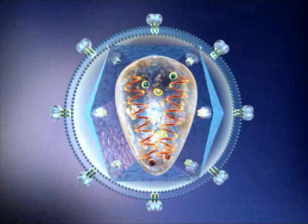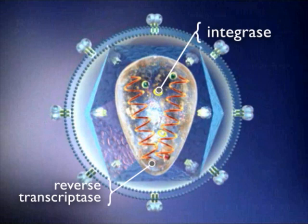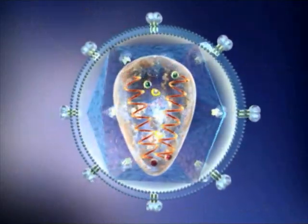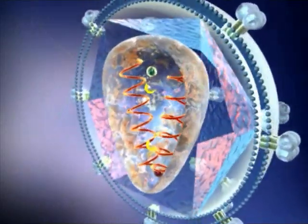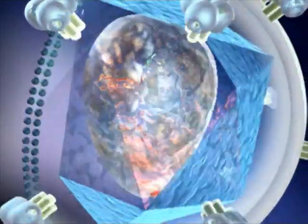These components include three enzymes called reverse transcriptase, integrase, and protease, and two strands of ribonucleic acid, or RNA, which carry genetic information.